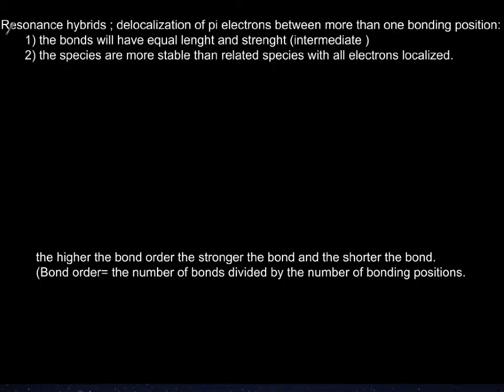To talk about the resonance hybrid, you can also justify it as delocalization of pi electrons. When pi electrons can move between more than one bonding position, meaning if you have at least three atoms that the pi electrons go back and forth, you have resonancy. In simple words, you can also describe resonance hybrid as having more than one possible Lewis dot structure for a molecule or an ion. Now what happens if you have resonancy or delocalization of pi electrons?